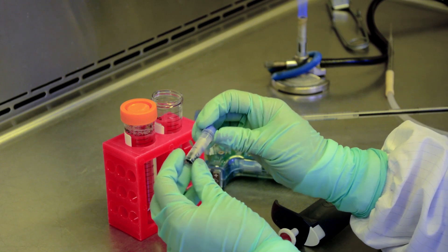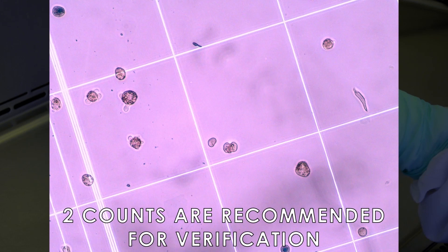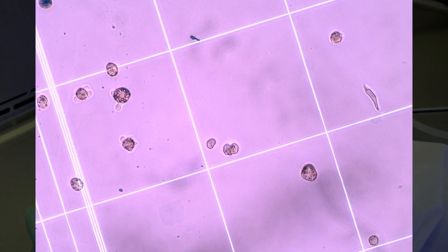Cell viability can now be assessed by placing an aliquot from the counting tube on the hemocytometer and counting the dead blue cells and viable cell number.